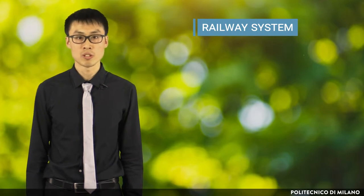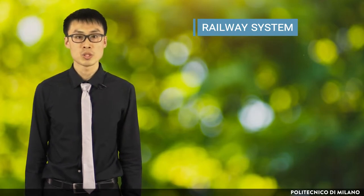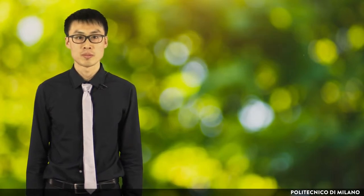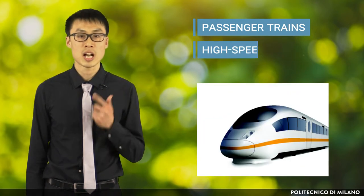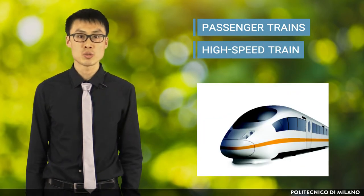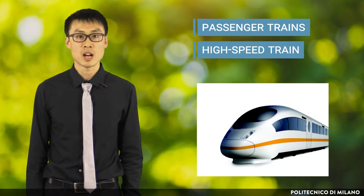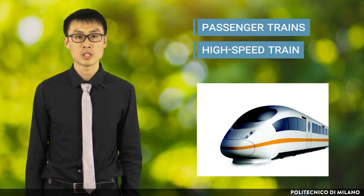Now let's start with a brief introduction about the railway system. The railway system basically includes train and infrastructure. Depending on the mode of service, the trains can be roughly classified as passenger and freight trains. The former includes various types of trains, such as tram, commuter train, and high-speed train, which refers to the train running at a speed higher than 250 km per hour.